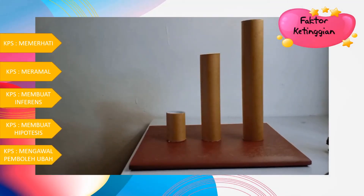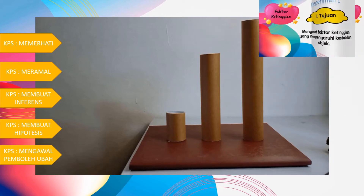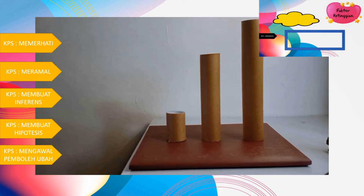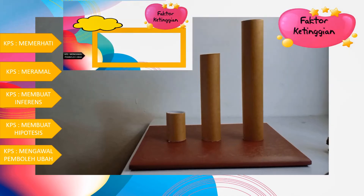Ini adalah amali yang pertama, iaitu menyiasat faktor ketinggian yang mempengaruhi kestabilan objek. Penyataan masalahnya ialah bagaimanakah ketinggian mempengaruhi kestabilan objek? Pemboleh ubah dimanipulasi ialah ketinggian objek — ketinggian objek berbeza. Pemboleh ubah bergerak balas ialah kestabilan objek. Dimalarkan ialah jenis objek, iaitu menggunakan gelung tisu.